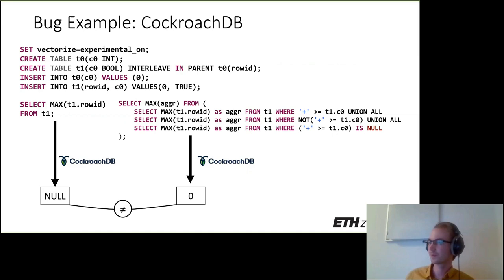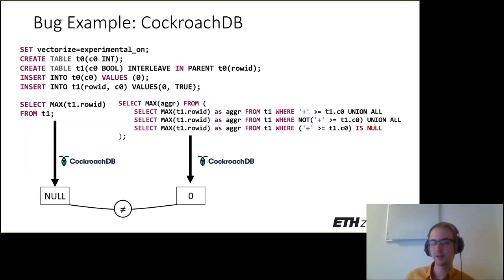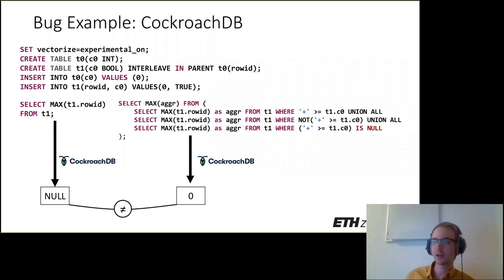A question: how many queries do you need to generate to find bugs in, say, CockroachDB? For evaluations, we typically developed the DBMS testing setup simultaneously and ran it over three to five months across all systems. From personal experience, after implementing a new operator and letting SQLancer run for about one minute, most bugs would already be found. Depending on the DBMS, SQLancer generates about 10,000 queries per second, and many bugs can be detected very quickly.